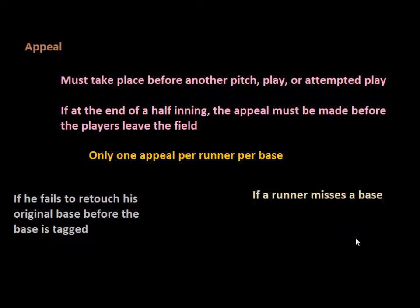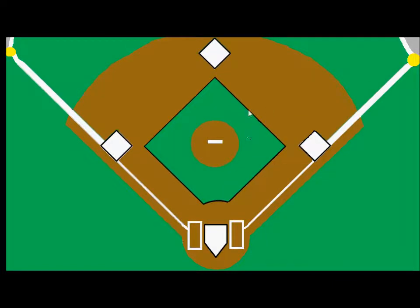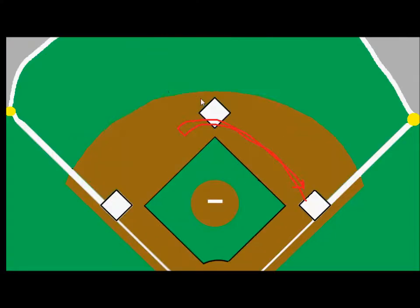This can also come into play if a runner is running, does step on second base, but then realizes he has to turn around and come back — for example, if a ball was caught in the outfield. He is responsible for stepping on second base again on his way back. So whenever he's returning to first base, he would have to step on it. If he doesn't — maybe he tries to cut across the field to get back to the base quicker — the defense could then appeal that situation.